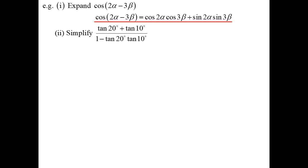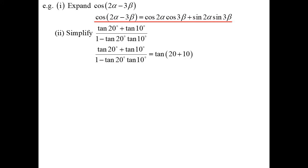Simplify this one — this is actually using the tan formula in reverse. The pattern tan plus tan on 1 minus tan tan is there, so it must be tan(20° + 10°), which is tan 30°, and we know that to be 1/√3.